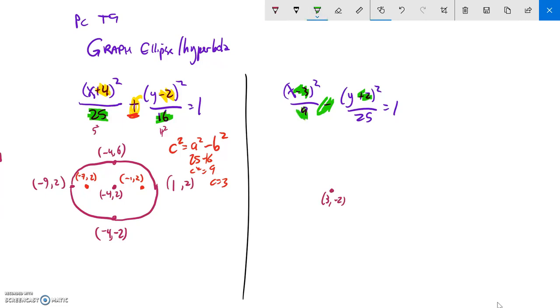Next thing I notice is this is 3 squared and this is 5 squared. So my offset in the x direction is 3, so I'm going to go 3 in both ways, and 5 in the y direction. And I'm going to draw my rectangle in here because that's going to give me my asymptotes.